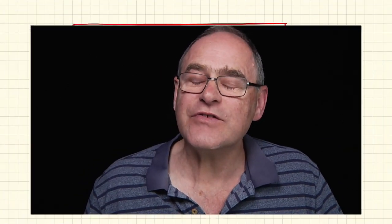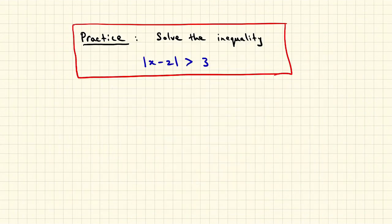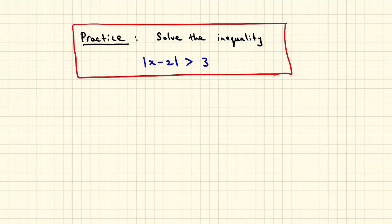Let's vary the previous exercise by turning the equation into an inequality. Let's replace equals by greater than. Okay, let's solve it. Here's the diagram from the previous solution where we had equals. But now because we've got greater than, neither minus one nor five are solutions. So we want to exclude them, so we'll draw little circles around them.